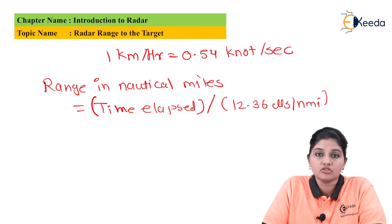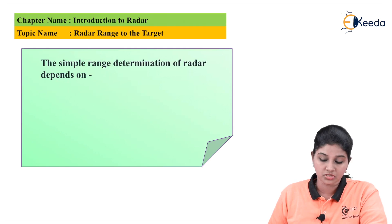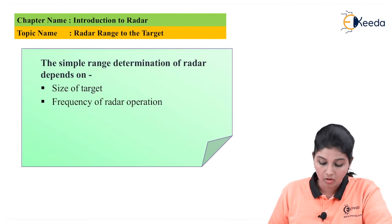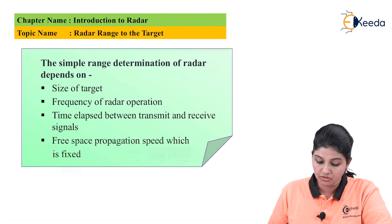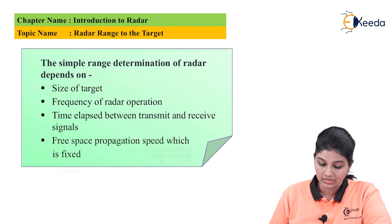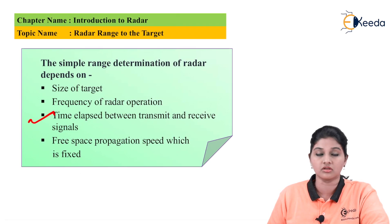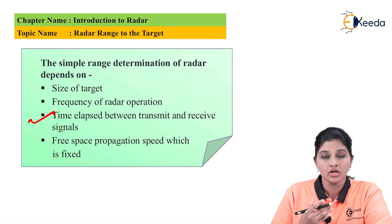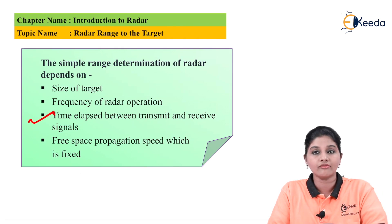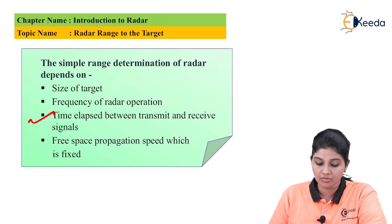Now let's look at an MCQ to understand the topic in more detail. Question: The simple range determination of radar depends on — (a) size of target, (b) frequency of radar operation, (c) time elapsed between transmit and receive signal, (d) free space propagation speed which is fixed. The answer is (c): it depends on the time elapsed between transmit and receive signal, which gives the total time period used to determine the range.